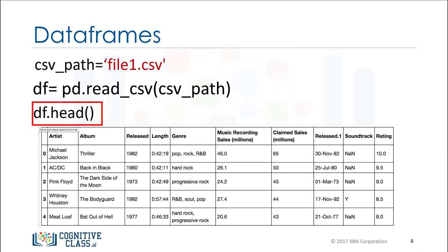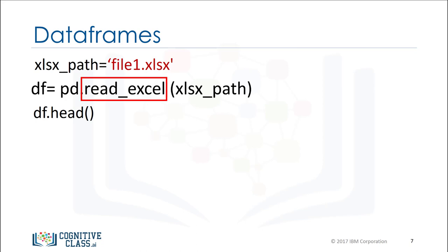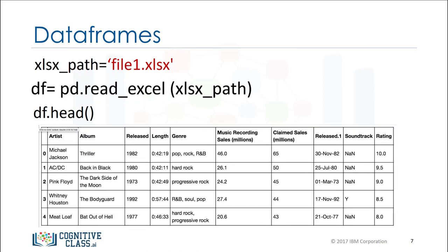We can use the method head to examine the first five rows of a data frame. The process for loading an Excel file is similar — we use the path of the Excel file, the function read_excel, and the result is a data frame.